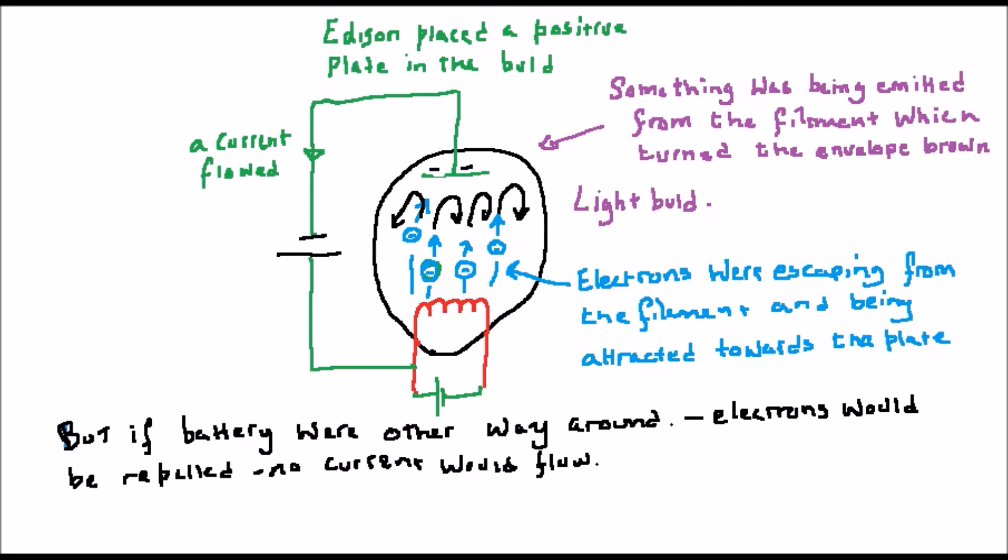You might also note that this device explains the origin of the name diode. It has two electrodes, the filament and the plate.